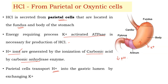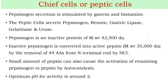Due to the accumulation of H+ ions in the lumen, there is a decrease in pH, which is responsible for the activation of pepsinogen. Pepsinogen secretion is also stimulated by gastrin and histamine. Peptic cells not only synthesize pepsinogen, but also synthesize renin, gastric lipase, gelatinase, and urease — all these enzymes are synthesized from the peptic cells.